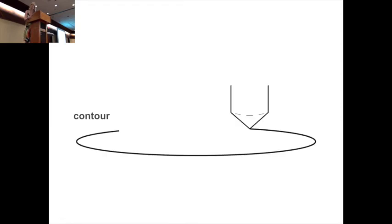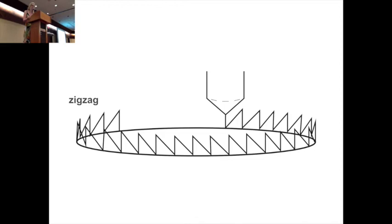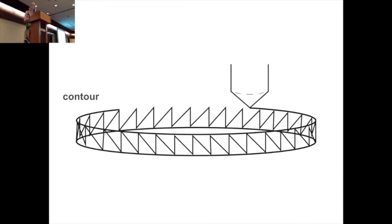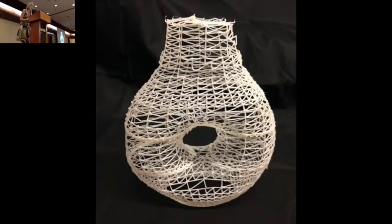It starts by printing a contour, then it prints a zigzag of a certain height, and then it prints the next contour on top. Let me show you one more object that illustrates this.